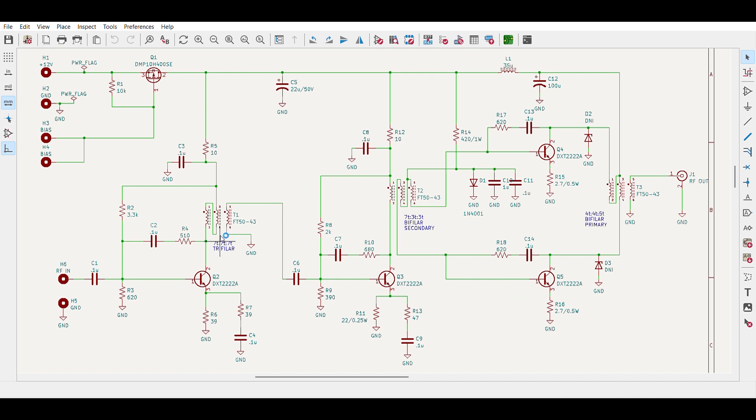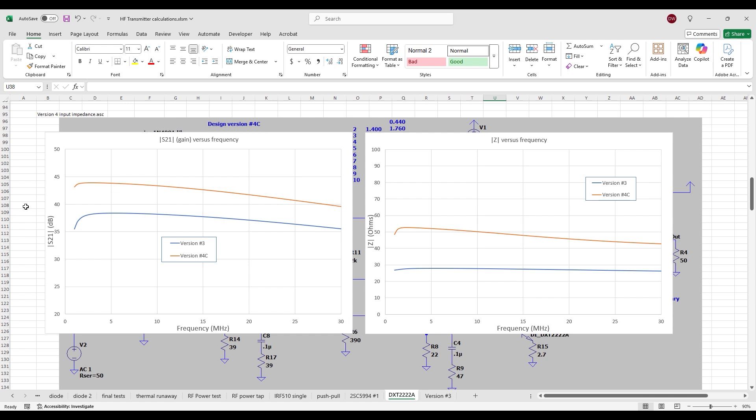All three stages now have emitter degeneration and all three have collector-to-base feedback. I've tweaked the number of turns in all three interstage transformers. The first one is now trifilar. Lots of tweaks to exact values for all the bias, feedback, and other resistors - all with the goal of optimizing interstage impedances, input impedance, and getting the overall gain where I want. I mentioned this is revision C - there were revisions A and B that were incremental steps.